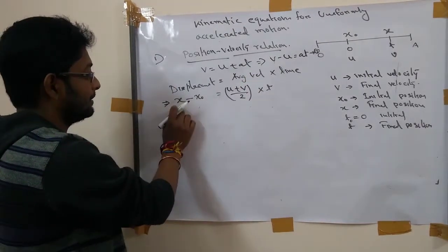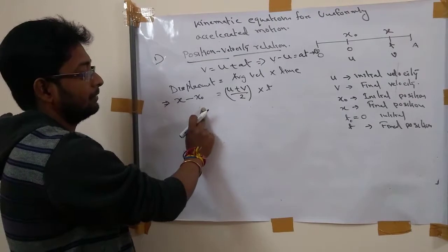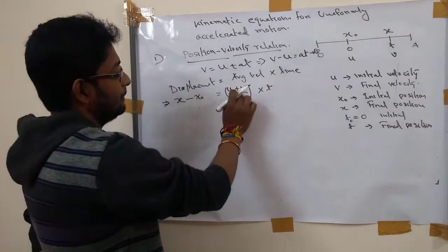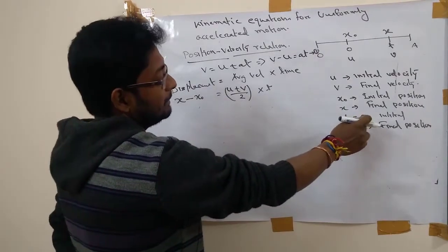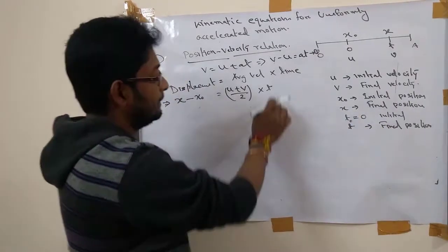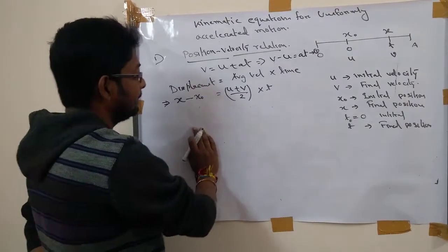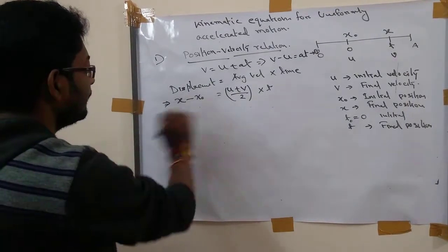What is displacement? Displacement is x minus x naught. And average velocity is u plus v by 2. And time is t. Initial, final minus initial, but initial is already zero, so just t.